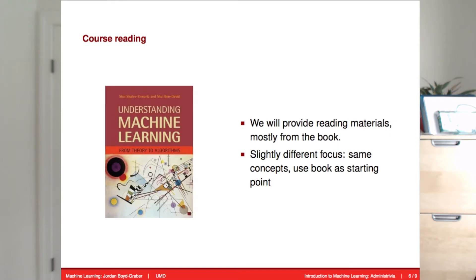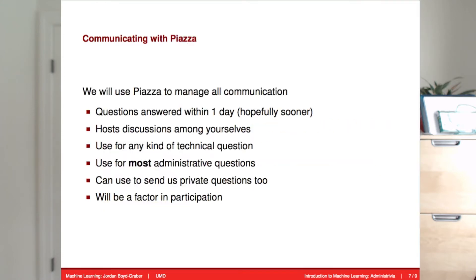We'll be using the book Understanding Machine Learning from Theory to Algorithms. This is the first time that I've used this book. I have yet to find the perfect textbook for machine learning at the graduate level. This is the fifth time I've taught this course, and this is the fourth textbook that I've used — it's still an ongoing search. We'll also be providing other reading materials from outside of this book, trying to find the best introductions to any particular topic.